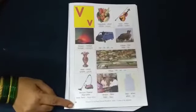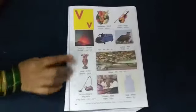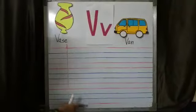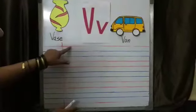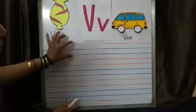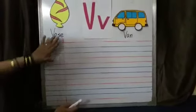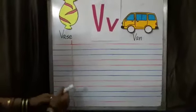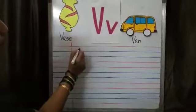Now I will show you how to write capital V. We are known to red and blue line notebook. Red line, blue line. We will use first three lines. We will not write in margin. We will start from top red line.